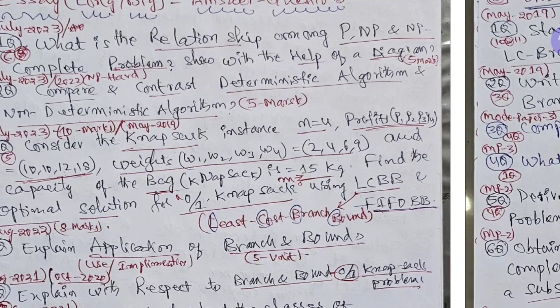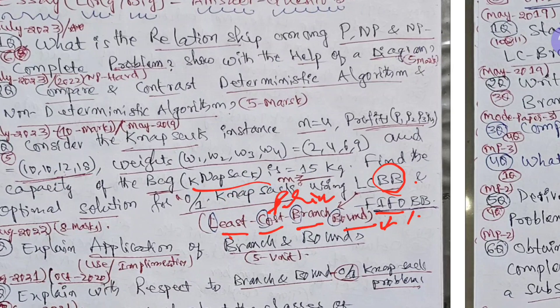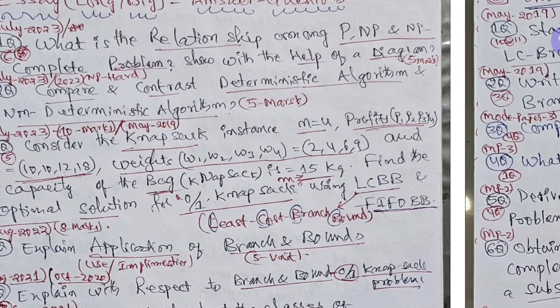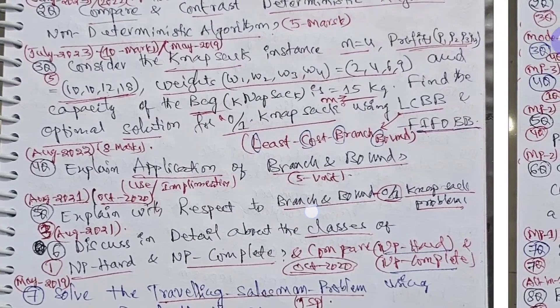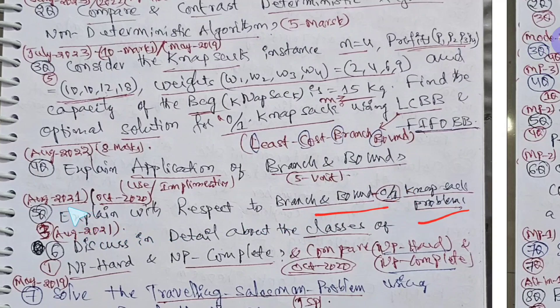Profits P1, P2, P3, P4 are given. See the example may change. The example may changes but you can understand the concept. Weights are given and capacity of the bag is also given 15 cases. See here 15 cases, this is a key point. Find the optimal solution for 0 by 1 knapsack problem using LCBB means least cost, least price, branch and bound. And FIFO, first in first out branch and bound. So this is the third question, nothing but 0 by 1 knapsack problem only.